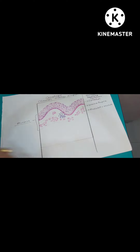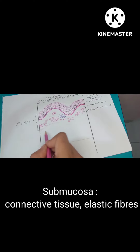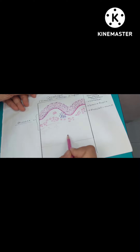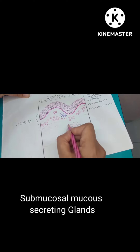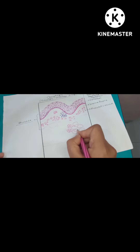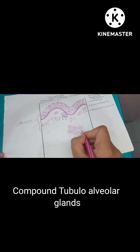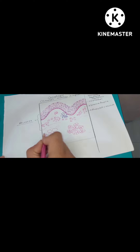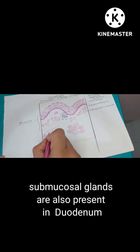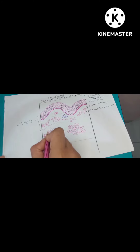The next layer is the submucosa, which shows connective tissue, elastic fibers, and submucosal glands. These submucosal glands are compound tubular alveolar glands. In the GI tract, such submucosal glands are also seen in the duodenum, where they secrete bicarbonate. In the esophagus, the submucosal glands secrete mucus.